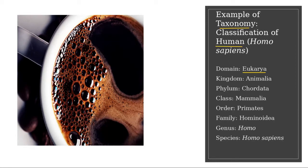Domain Eukarya has several kingdoms — there are four kingdoms under the Eukarya domain. One of them is Animalia, so human is included in kingdom Animalia. Kingdom Animalia consists of several phyla; one of them is Chordata. Chordata is a group of organisms that have a backbone. So human has a backbone, and therefore human is included in phylum Chordata.